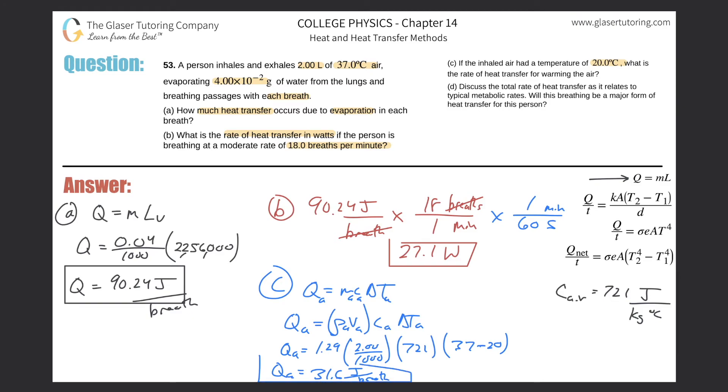And then what do we have to do? Well, then we're going to have to do a very similar conversion to what we did over here. Multiply it by the breathing rate. Then divide it by essentially the seconds. So after I do that, I'm going to take 31.6, multiply that by 18, then divide it by 60. It's the same conversion as at the top. And this now works out to be 9.49 or so. 9.49 watts. Okay. And now, last but not least, letter D. Discuss the total rate of heat transfer as it relates to typical metabolic rates. Will this breathing rate be a major form of heat transfer for the person?